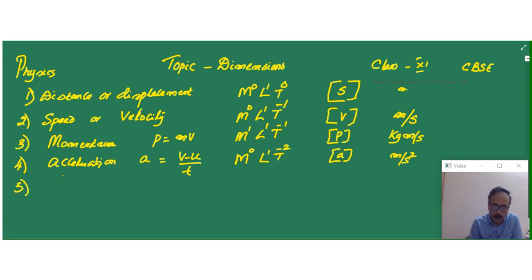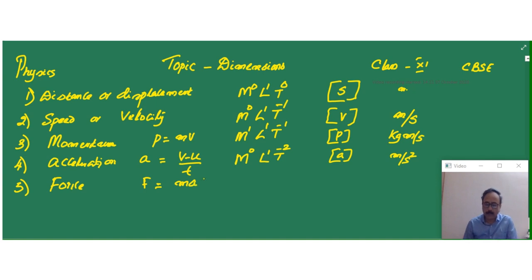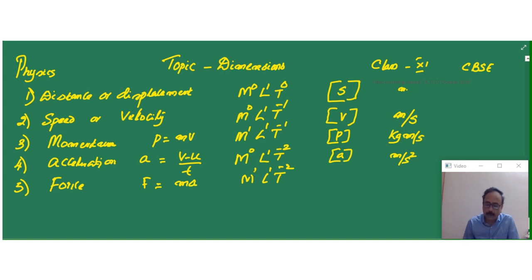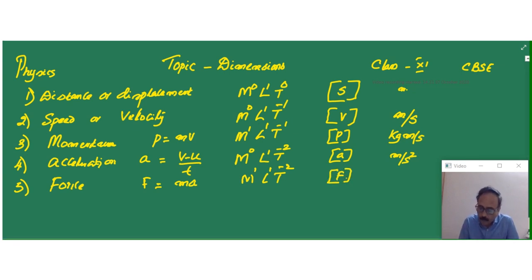Now after acceleration, let's talk about the dimensions of force. F is equal to M times acceleration. So here one mass term is there and acceleration is nothing but L T-2. Therefore M1 L1 T-2 is the dimensional formula for force. The SI unit is kg meter per second square, or Newton.